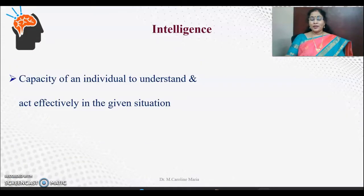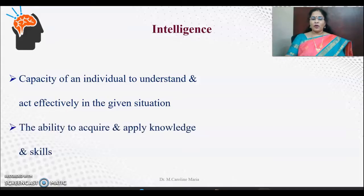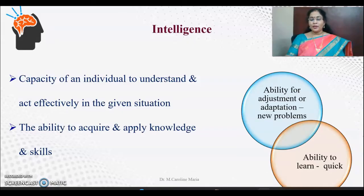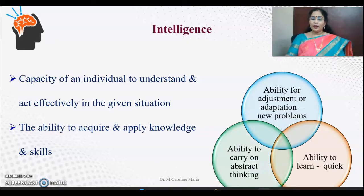Let's see first, what is intelligence? The capacity of an individual to understand and act effectively in a given situation is called intelligence. It is your presence of mind, how well you apply in a situation and deal with the situation. The ability to acquire and apply knowledge and skills, the ability for adjustment or adaptation to new problems, ability to learn quickly, and ability to carry on abstract thinking is called intelligence.